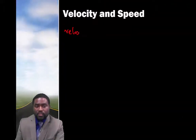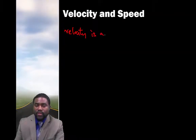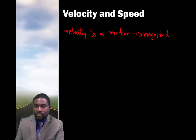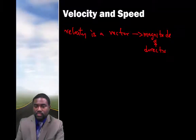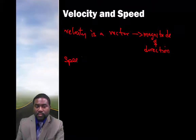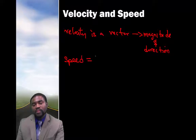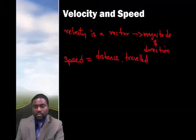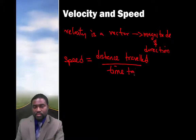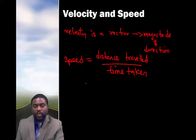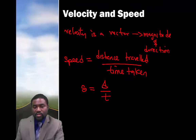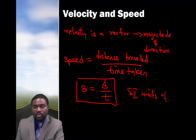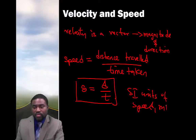Velocity is a vector, meaning it has both a magnitude and a direction. Speed, on the other hand, is equal to the distance traveled divided by the time taken. So speed S equals D over T. The SI unit of speed is meters per second.